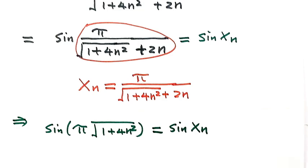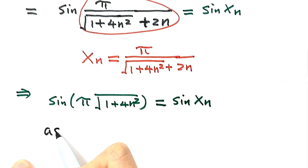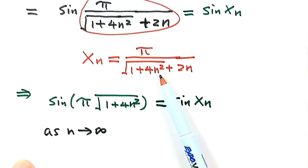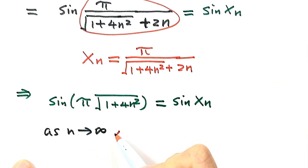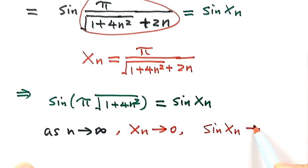Now as n goes to infinity, because the top is just π (a constant) and the bottom grows with n, xₙ goes to 0. And because xₙ approaches 0 as n goes to infinity, sine of xₙ also approaches 0.